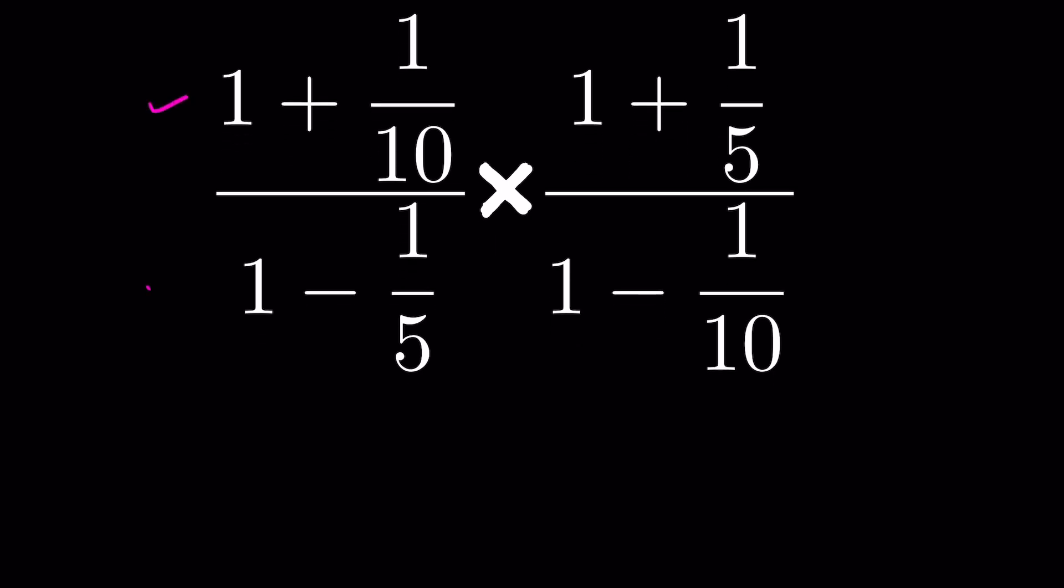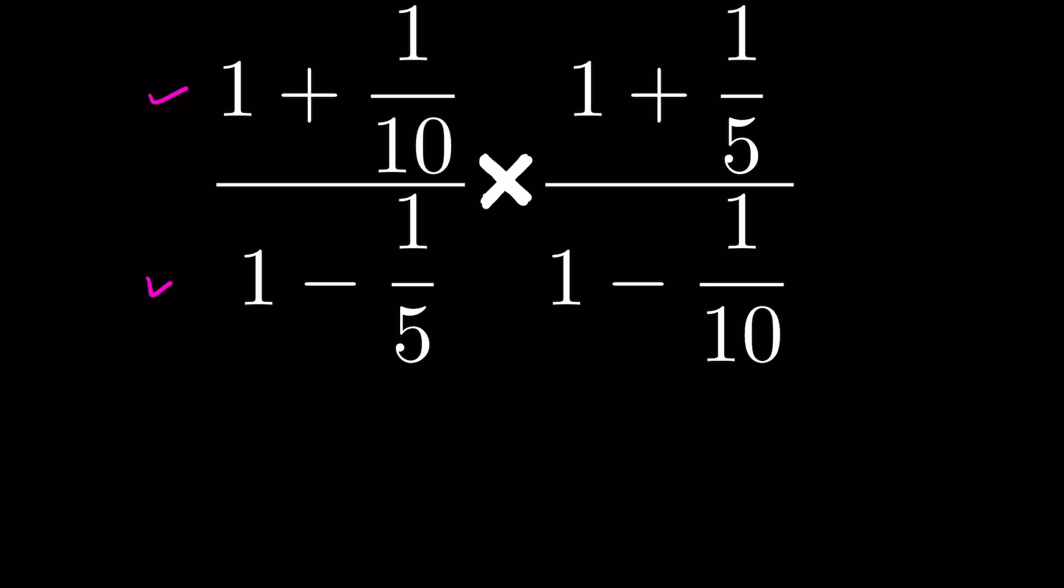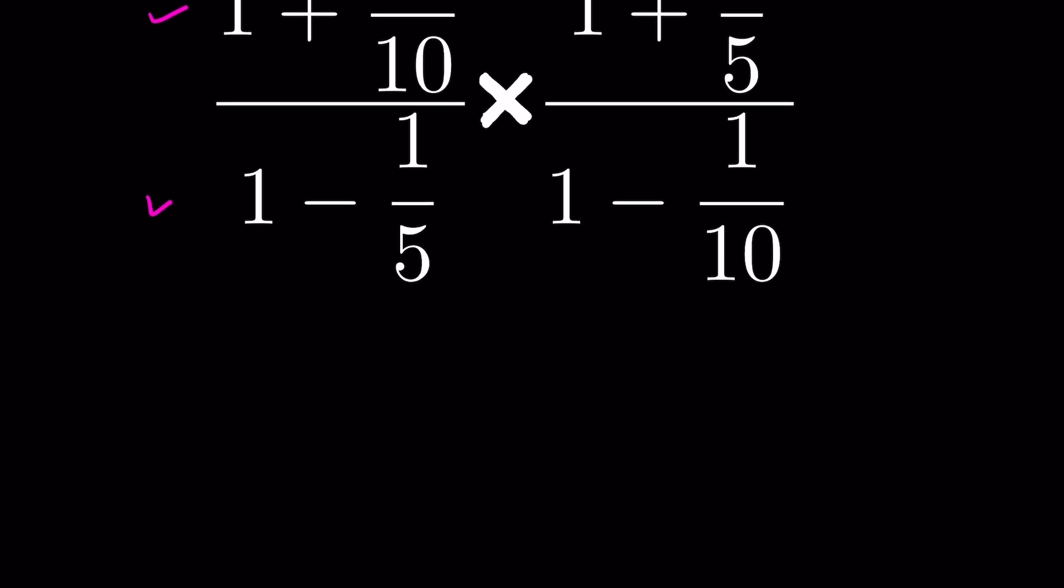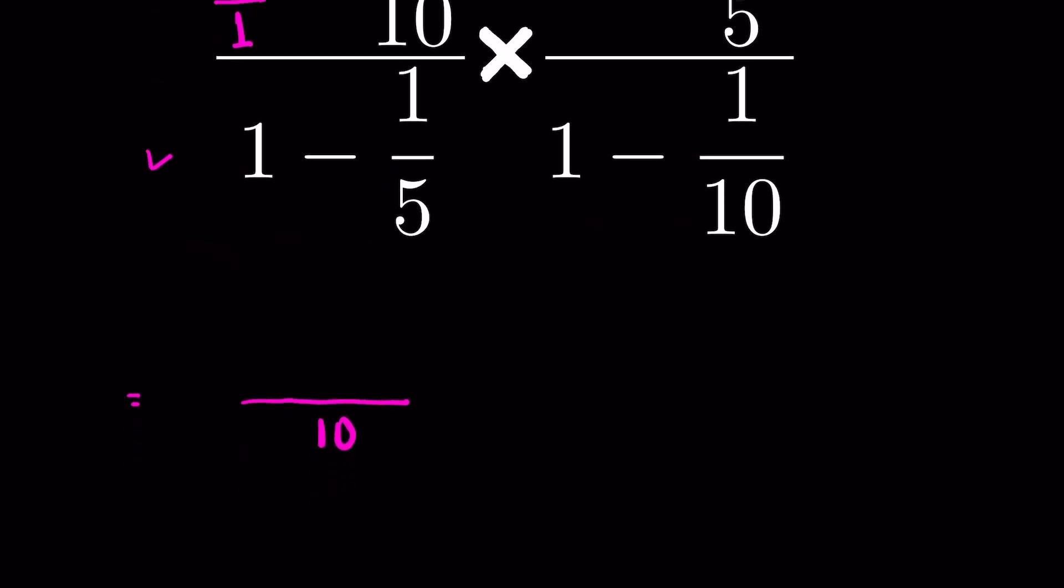First we will solve the fractions in the numerator and denominator separately. First is 1 plus 1 upon 10. If we take LCM here, 10, write 1 upon 1. When there is no denominator, we write upon 1.